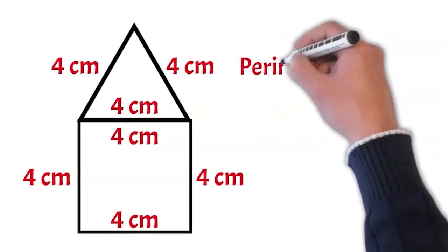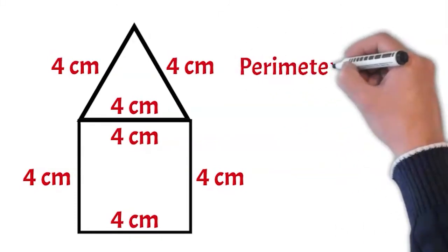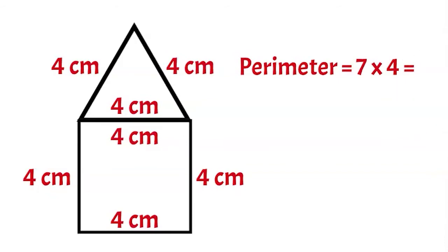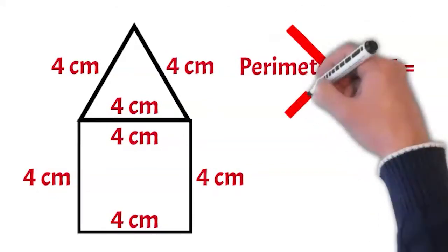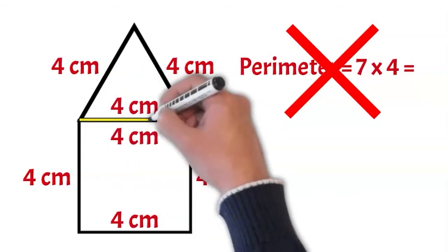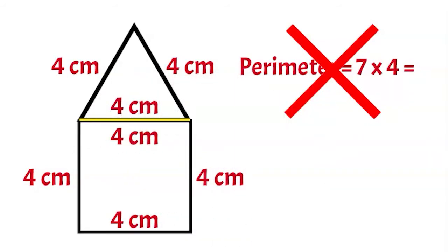Okay, so I have seven sides that are all four centimeters long, so my perimeter... Wait, you can't do that! Look at the side that is shared between the triangle and the square. It's not part of the perimeter because it's on the inside of the composite shape. Oh, thank you! I was about to make a huge mistake. Let's try that again.